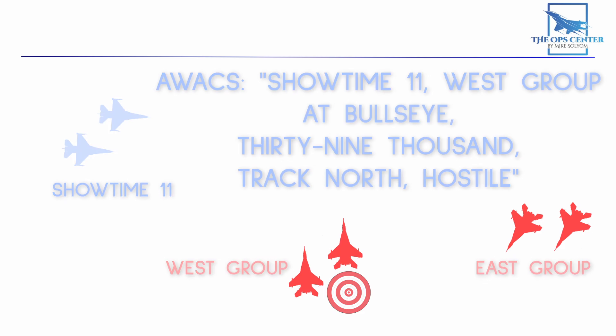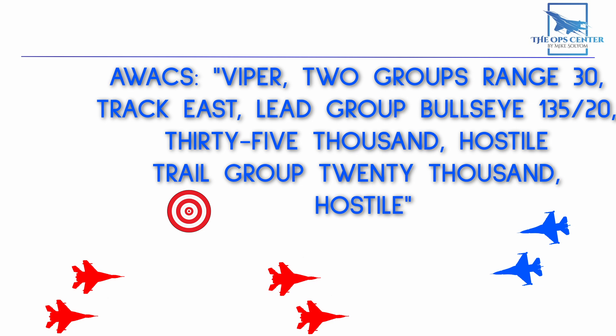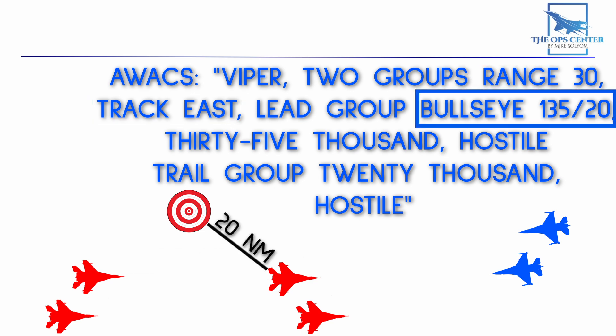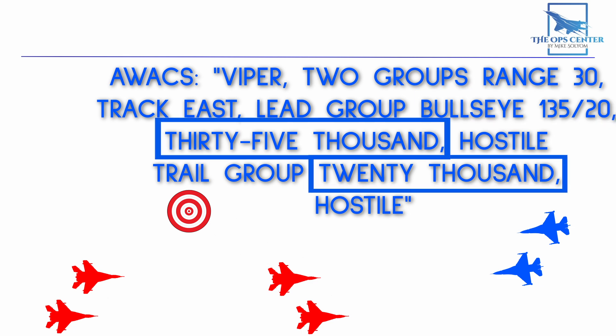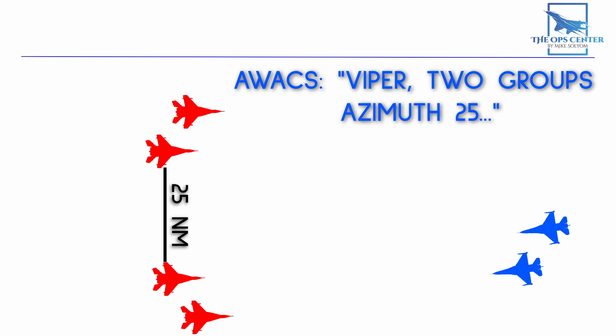Multiple groups can be described in a single radio call. In an example call, two groups are identified 30 miles from each other heading east. The lead group is 20 miles from Bullseye on a bearing of 135 degrees — southeast. We also know the altitudes of both groups and that they're hostile. If groups are not flying in trail, azimuth can be used instead — so if they were side-by-side with 25-mile separation, the call would start with 'two groups, azimuth, 25.'